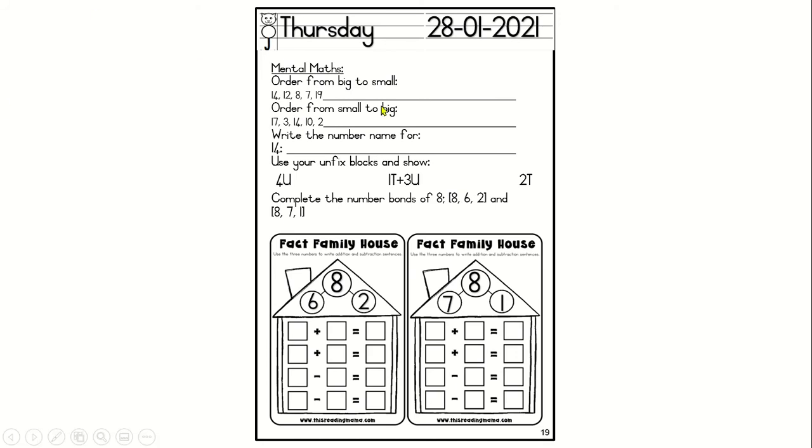Then I want you to order from big to small, from small to big. Write the number name for 14. Use your Unifix blocks and show me 4 units, 1 ten, 3 units, and then 2 tens. When you are done, please complete the number bonds of 8.